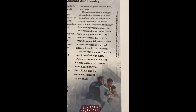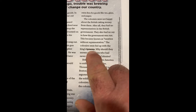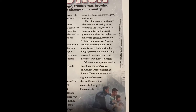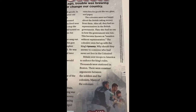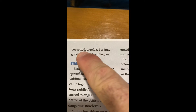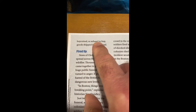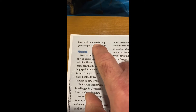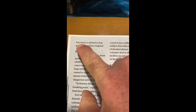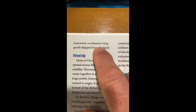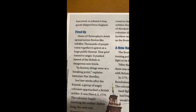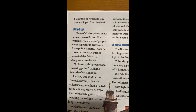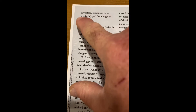Let's continue on a little bit more today. We left off here about the king's tyranny. It says Britain sent troops to America to enforce the king's rules — thousands were stationed in Boston. There were constant arguments between the soldiers and the colonists. Many of the colonists boycotted, or refused to buy. Boycotted means you've refused to buy something. They refused to buy goods that were shipped from England. They said, we're upset about all this stuff — we're just going to stop buying your things. We're boycotting them.